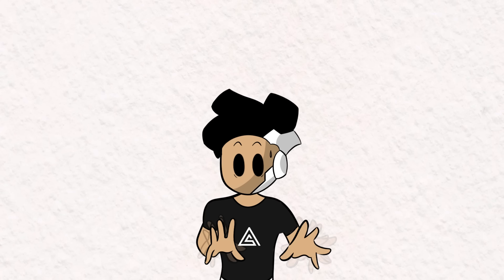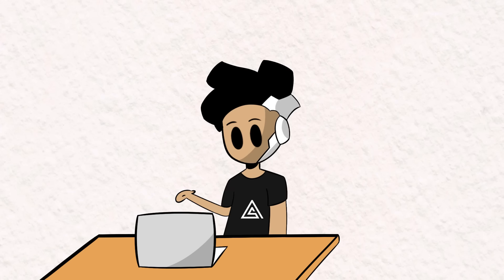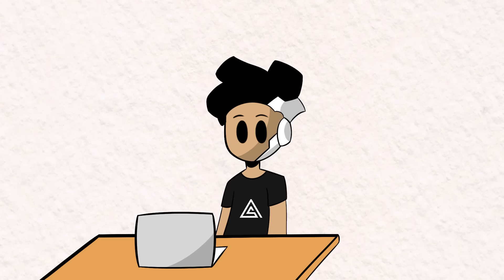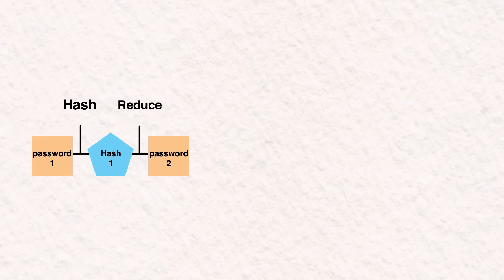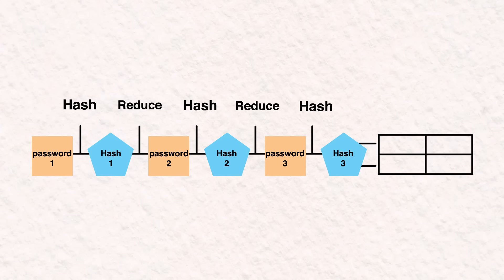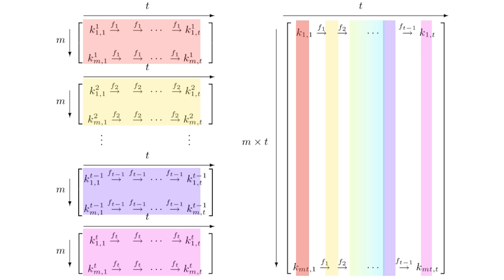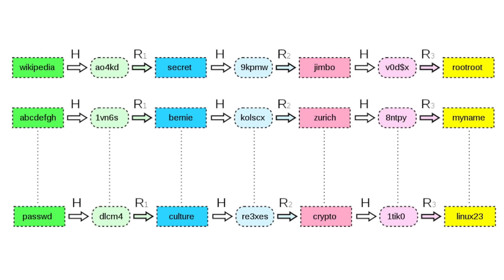Rainbow tables aren't just simple hash tables — they're unique because of their use of reduction functions. Reduction functions convert a hash into a potential plaintext password, which we can then rehash to create a chain of passwords and hashes. These chains are added to the table to improve the likelihood of cracking a password. The term 'rainbow' refers to the use of different colors to represent various hashing and reduction functions.